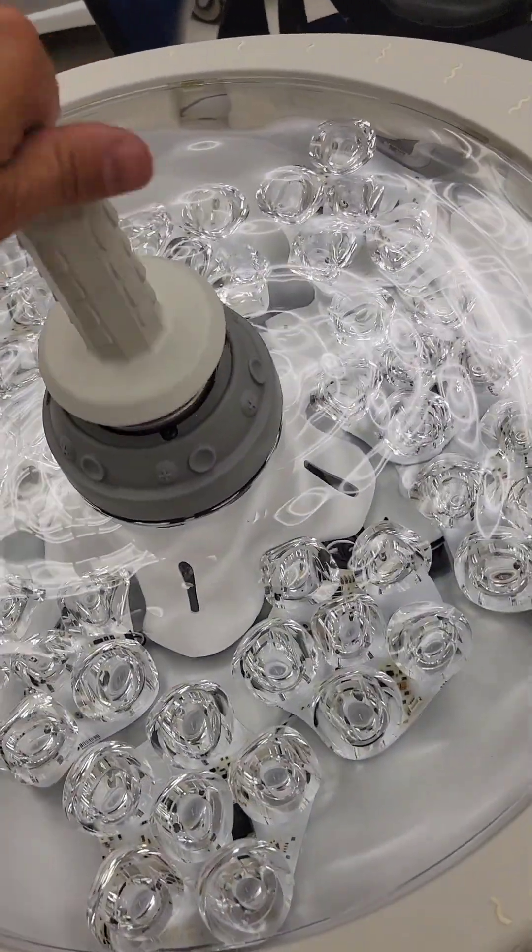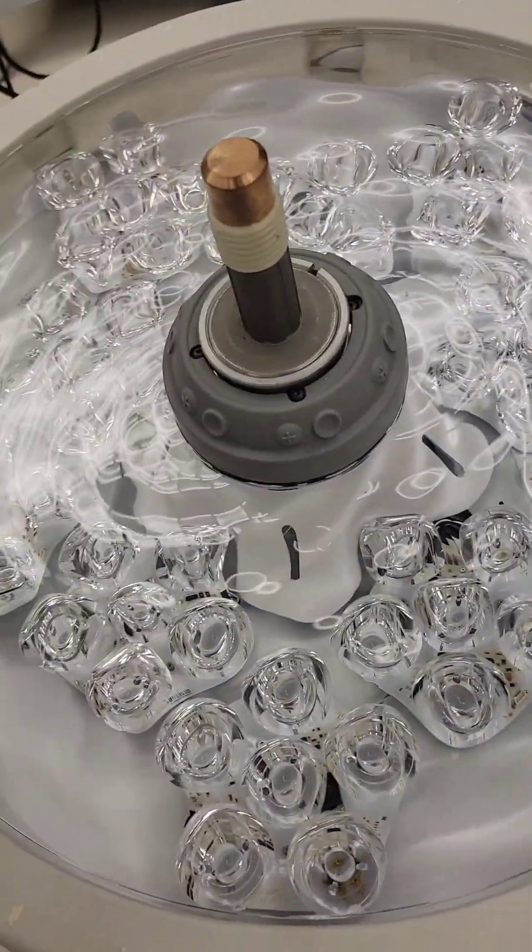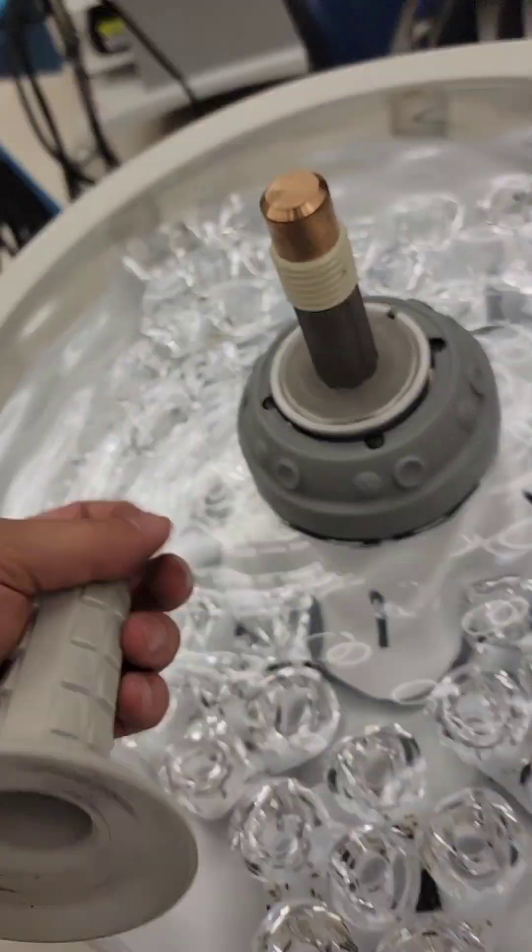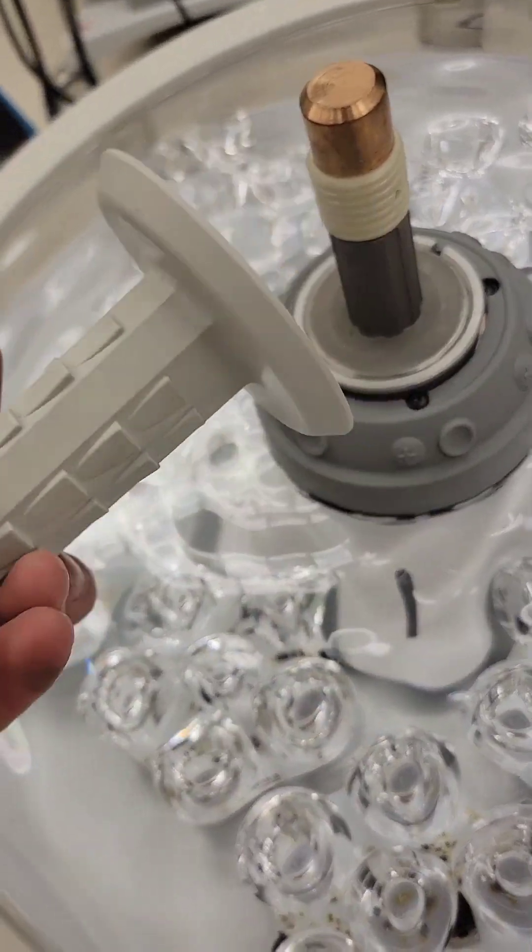So now to pull this light head apart, unscrew this. I've already done it so it looks so easy. It takes a little bit of torque to undo this, but you see it's just screwed in. No set screws or anything.